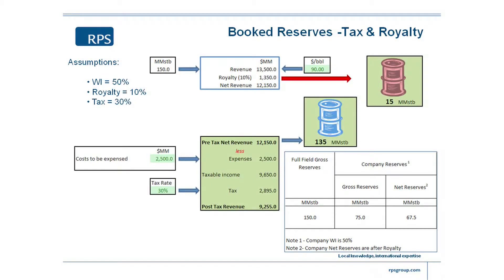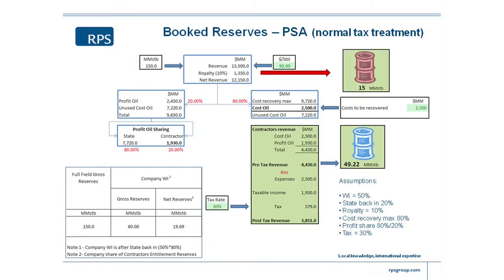So how would we report that in this field? This is an extract of one-hour tables. The oil field gross reserves are 150 million barrels. The company's reserves are the gross reserves — referred to as the working interest reserves. So if I've got a 50% working interest, then it's half of 150.